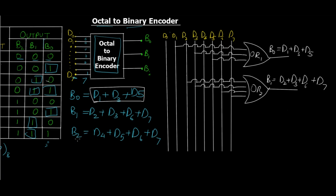Moving on to the last output expression for B2, we have D4, D5, D6, and D7. Starting from D4, D5, D6, and D7. Again, an OR operation between the four. So this is the last one which gives us B2, which is equal to D4 plus D5 plus D6 plus D7.